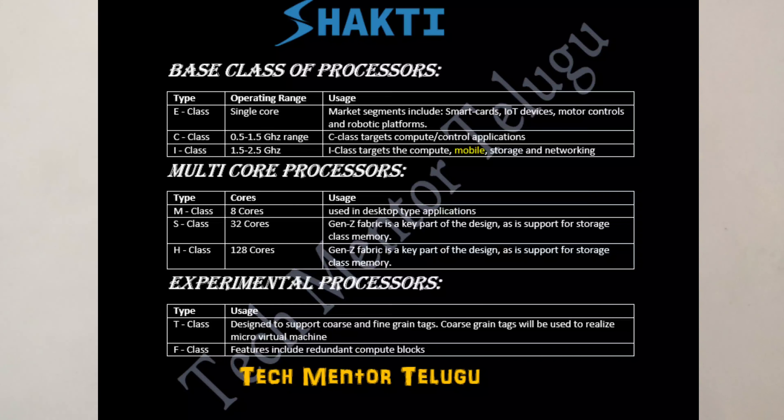For I-class, you can also choose M-class, S-class, and H-class for multiple cores. M-class is 8 cores, S-class is 32 cores, and H-class is 128 cores. H-class is used in supercomputers with 128 cores. For mobile use, we have 8 cores, and you can go up to 128 cores.